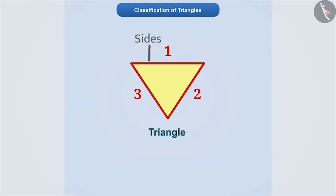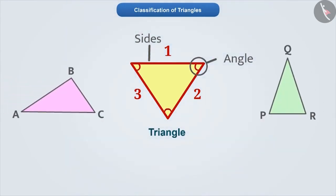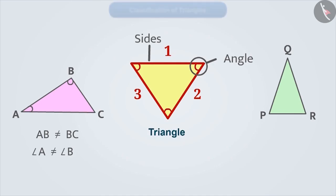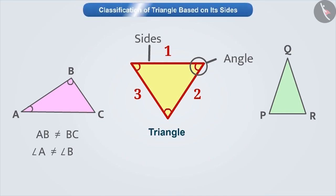Along with three sides, a triangle also has three angles. In different triangles, we see that the measures of sides and angles are different. To understand triangles better, we classify them on the basis of their sides and angles. So, let's first learn the classification of triangles based on the sides.